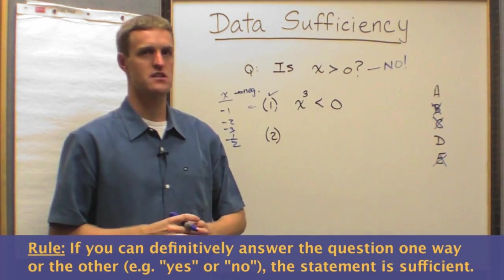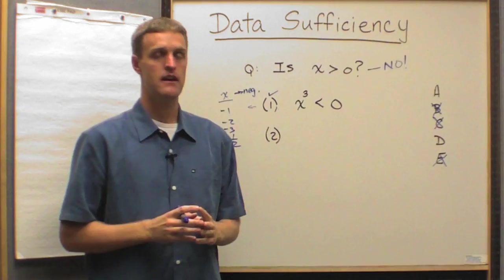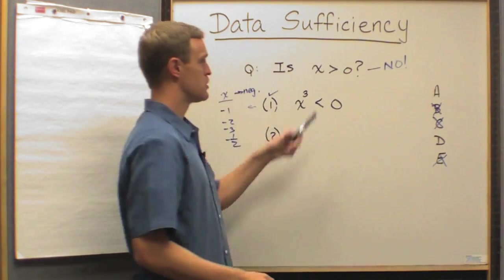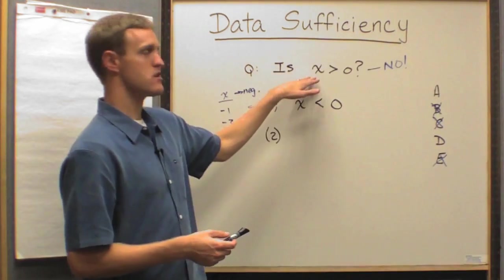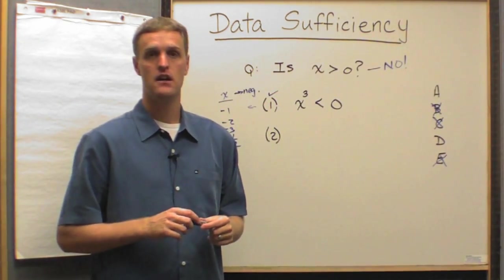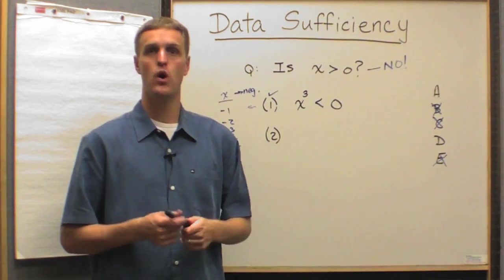Statement one is sufficient. So we cross off answer choices B, C, and E. I'll make it even more concrete for you. Remember what we said? You do the brain work. What would enable us to answer this question? Well, obviously, if we knew something about the nature of x definitively.